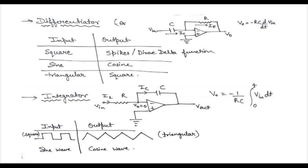For the differentiator, the output voltage is equal to minus RC times d/dt of V_input — whatever input voltage you have provided. This is the differentiator circuit: it differentiates the input. For the integrator circuit, the output voltage is equal to minus 1/(RC) times the integral from 0 to t of V_input dt.